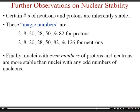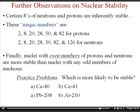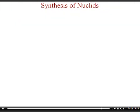Additionally, nuclei with even numbers of both protons and neutrons are more stable than those with odd numbers. For example, calcium-40 has 20 protons and 20 neutrons — both magic numbers — making it very stable, while calcium-41 has 21 neutrons (odd), making it less stable. Similarly, lead-208 has 82 protons (a magic number) making it stable, whereas astatine-210 has 85 protons (odd, not a magic number), making it less stable.